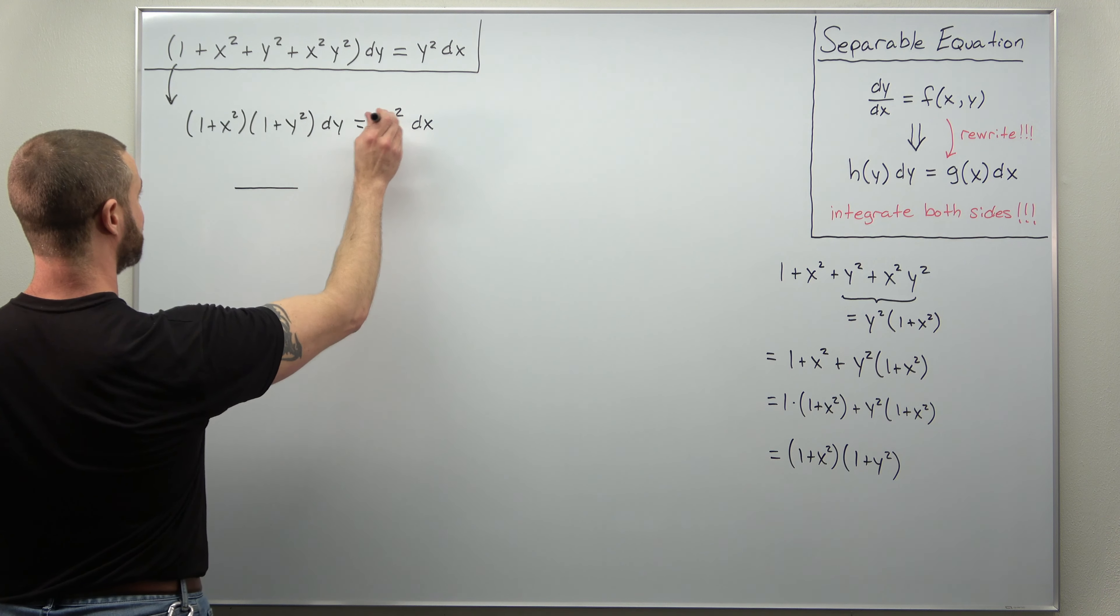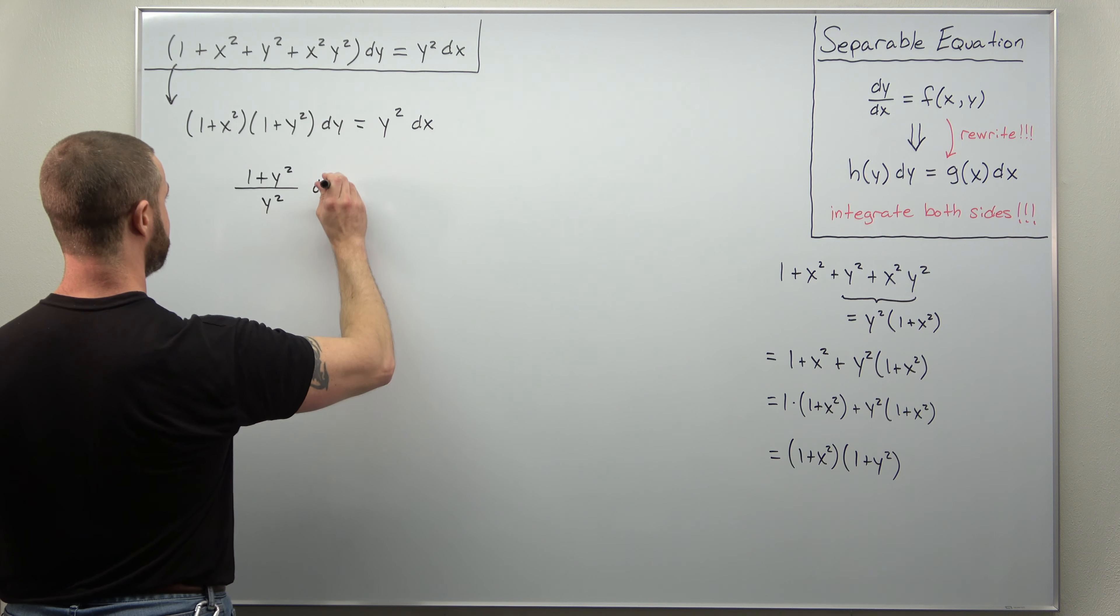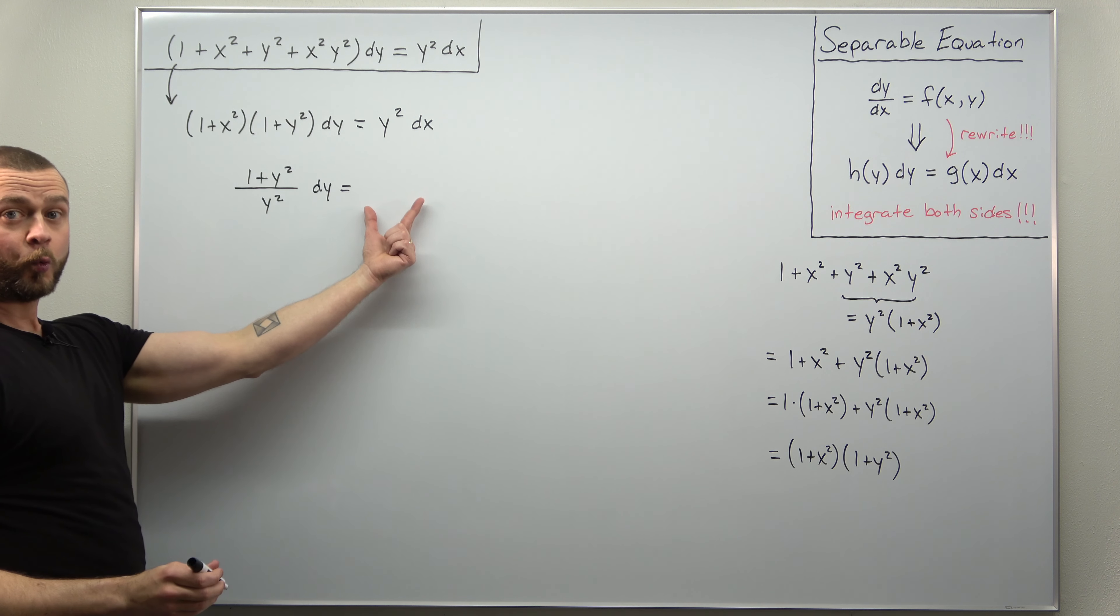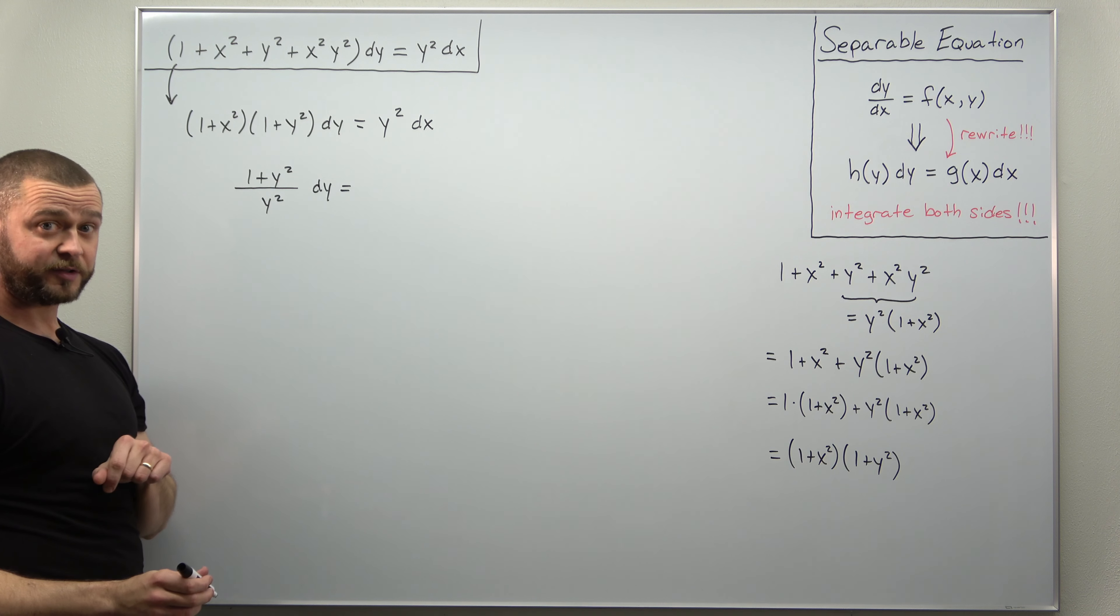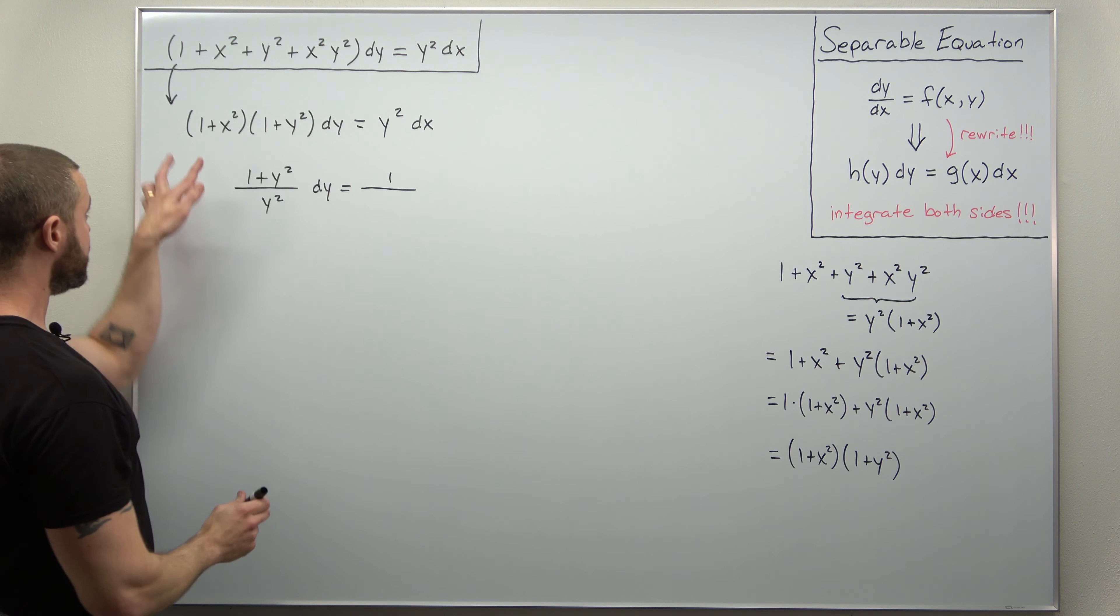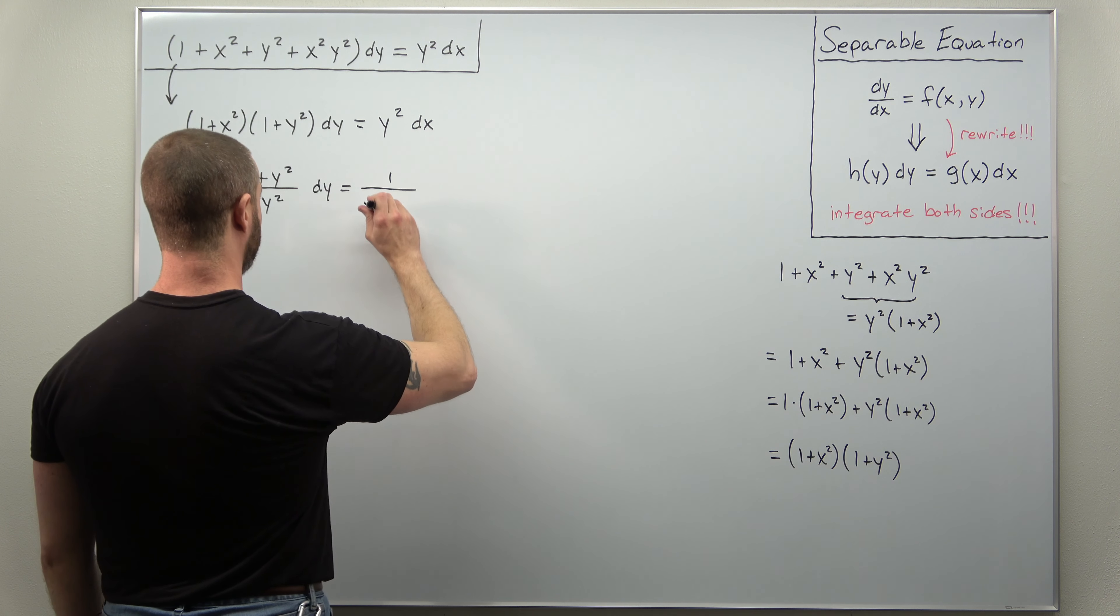So I'll write this as 1 plus y squared divided by y squared, and that's going to be multiplying dy. And now we are dividing 1 plus x squared to the other side. And I'm just going to switch the order of addition and write that as 1 divided by x squared plus 1.